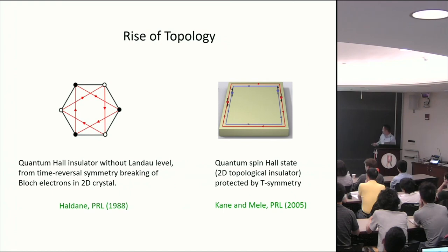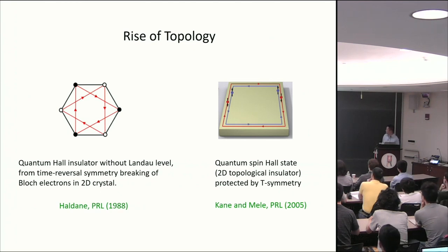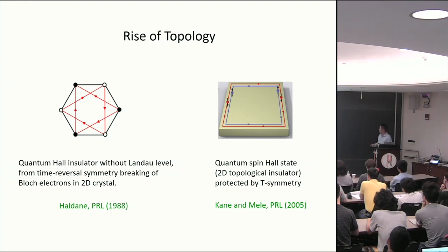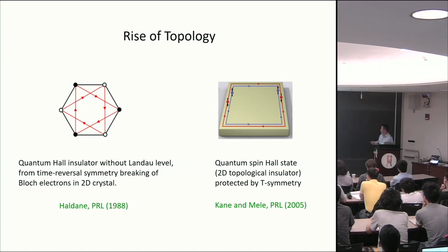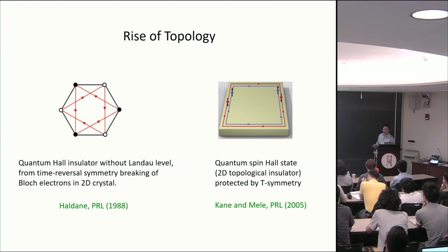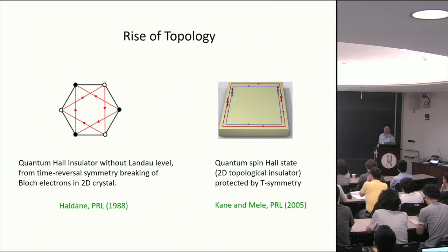In fact, even before 2D graphene was experimentally discovered, Haldane wrote a famous paper in the 1980s showing that topological states can arise from graphene. This is one of the earliest examples of a topological state in the absence of an external magnetic field. It's a quantum Hall state but without Landau levels — instead it has a well-defined band structure from electrons moving in a periodic potential in the 2D honeycomb lattice. A crucial ingredient introduced in this paper is time-reversal symmetry breaking, which is not present in real graphene, but as a toy model it illustrated the concept of topology.